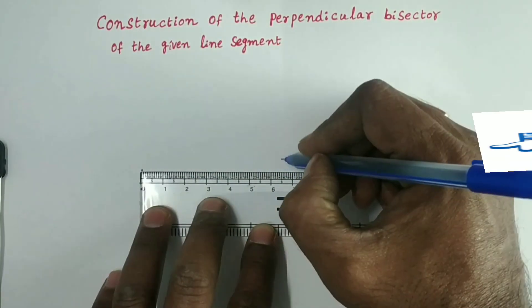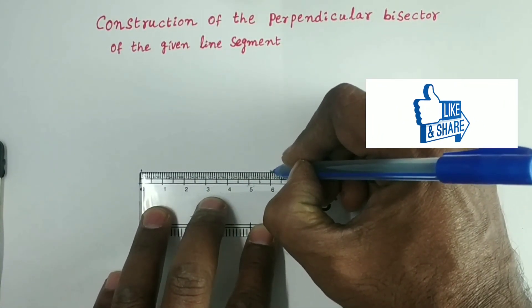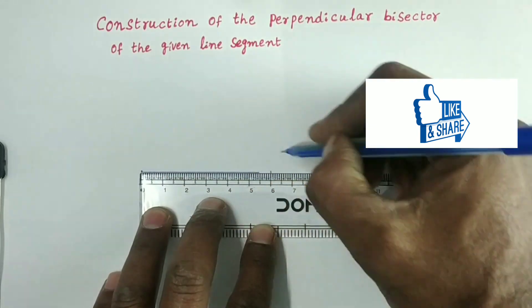Draw a line segment AB. For example, I am taking AB as 6 cm.